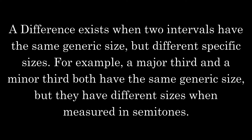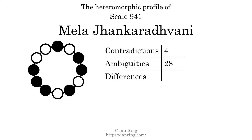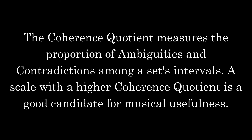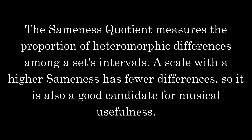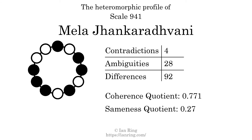A difference exists when two intervals have the same generic size but different specific sizes — for example, a major third and a minor third both have the same generic size but different sizes in semitones. The number of differences in this scale is 92. The coherence quotient measures the proportion of ambiguities and contradictions among a set's intervals. A scale with a higher coherence quotient is a good candidate for musical usefulness. The coherence quotient is 0.771. The sameness quotient measures the proportion of heteromorphic differences. A scale with a higher sameness quotient has fewer differences, so it is also a good candidate for musical usefulness. The sameness quotient is 0.27.